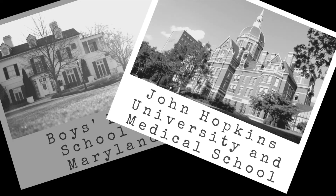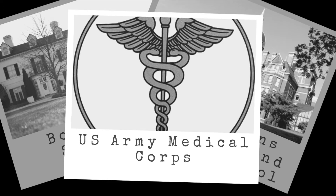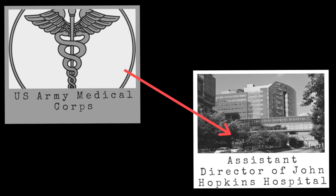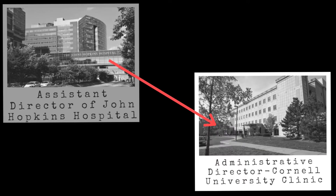Calvin Hooker Goddard was born October 30, 1881, in Baltimore, Maryland. He graduated from the Boys Latin School of Maryland in 1907, then graduated from Johns Hopkins University with honors four years later in 1911. In 1915, he graduated from medical school and joined the United States Army, where he served in the Army Medical Corps in France, Germany, and Poland during the First World War. In 1920, Goddard retired from the Army and became the assistant director of Johns Hopkins Hospital. He relocated again in 1924 to become the administrative director of Cornell University Clinic in New York.